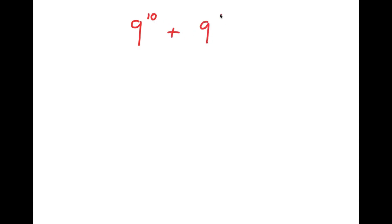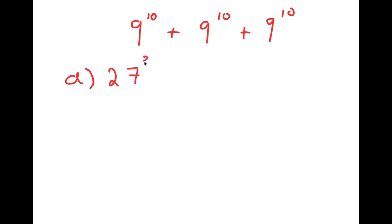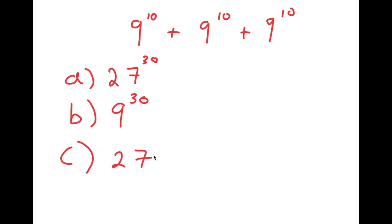In this video, I'm going to be solving the problem 9 to the power of 10 plus 9 to the power of 10 plus 9 to the power of 10. I have four answer choices: A is 27 to the power of 30, B is 9 to the power of 30, C is 27 to the power of 10, and D is 3 to the power of 21.